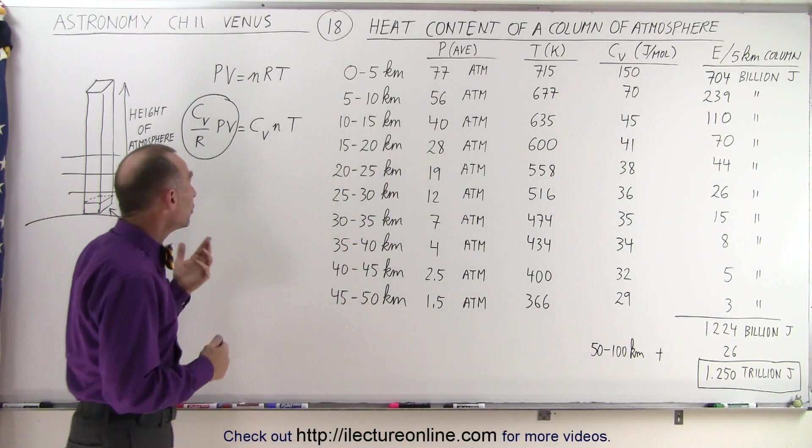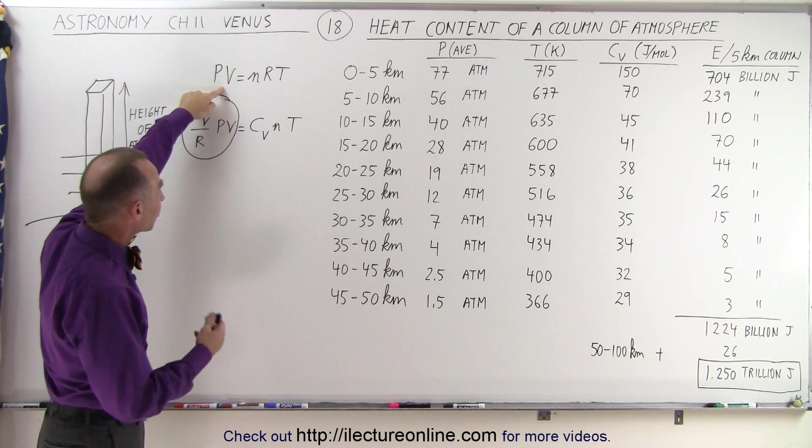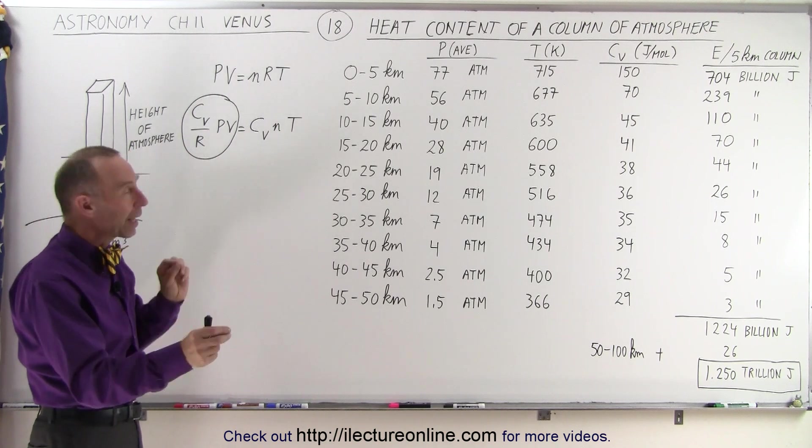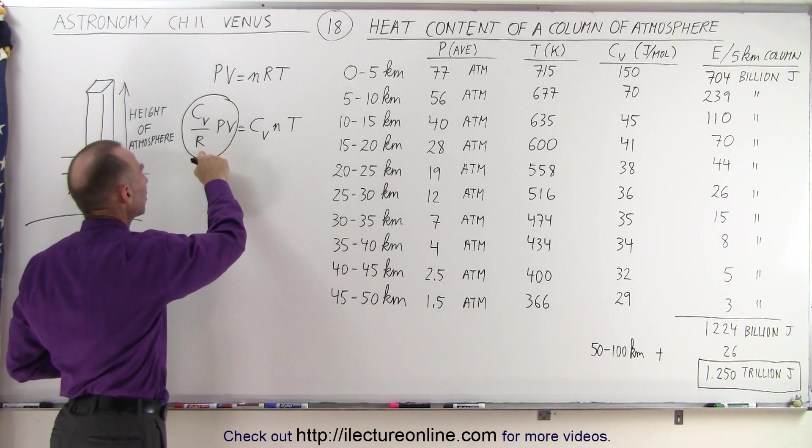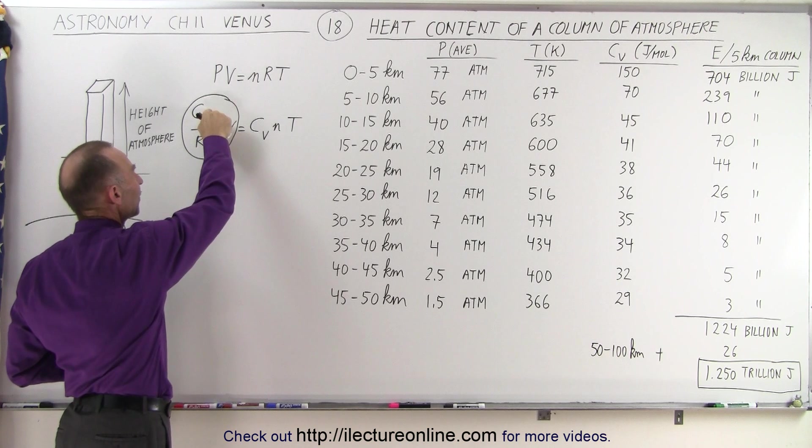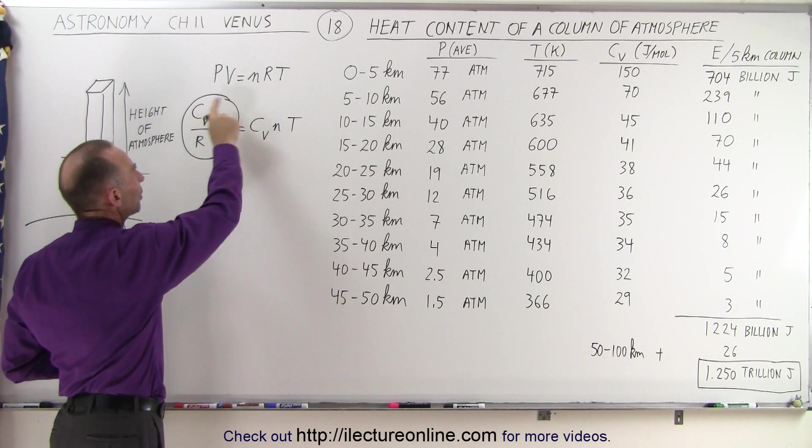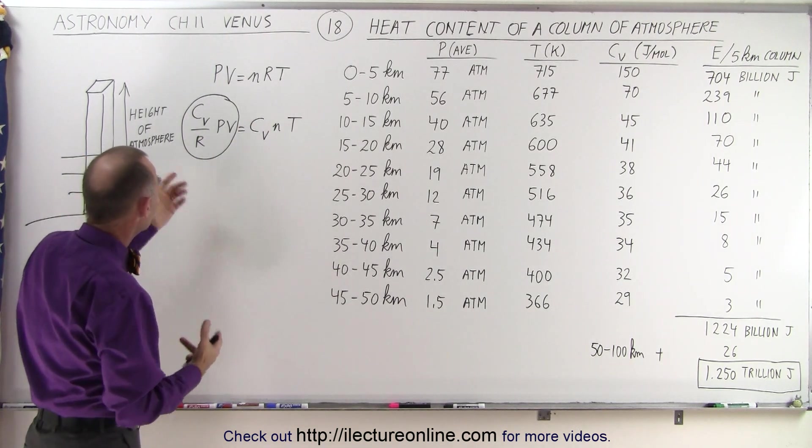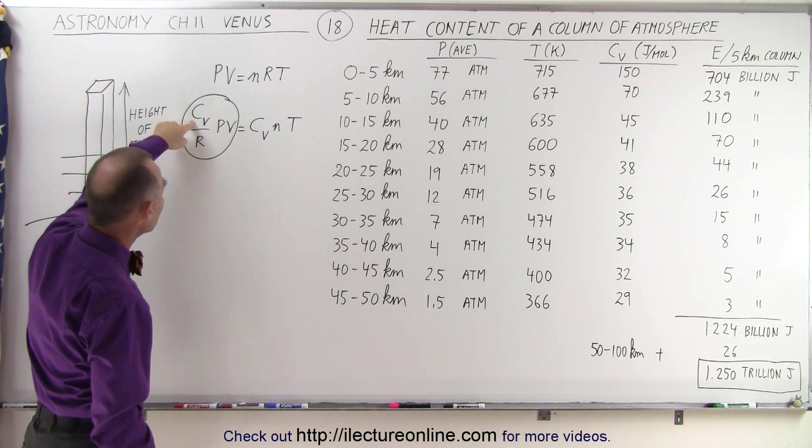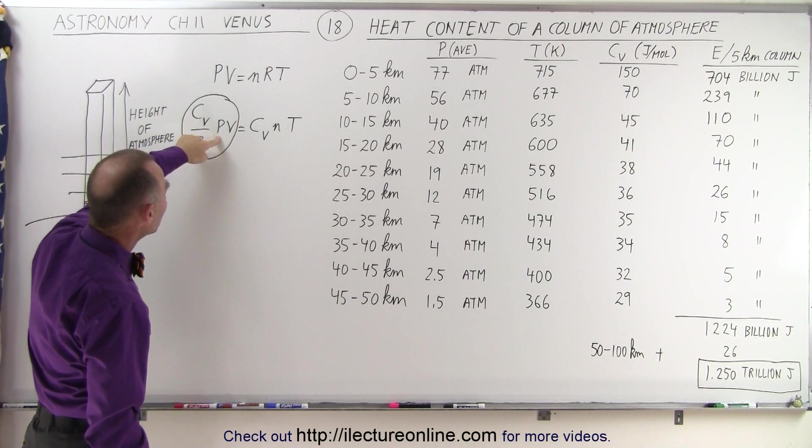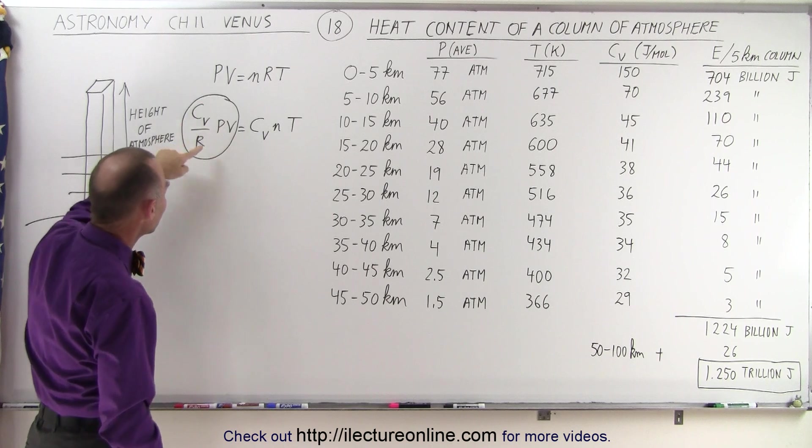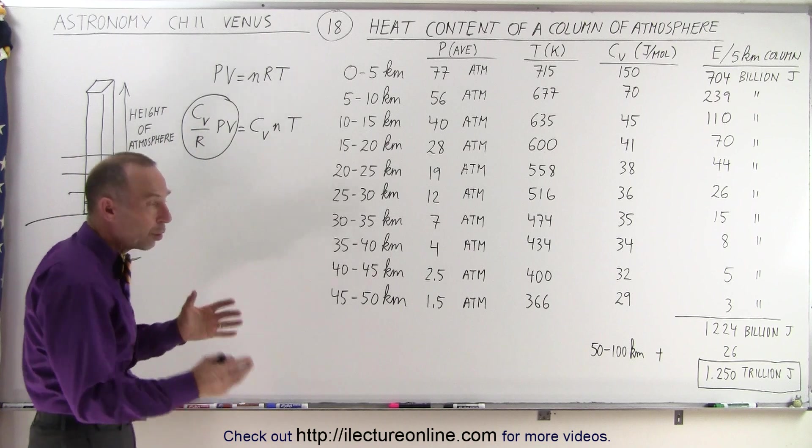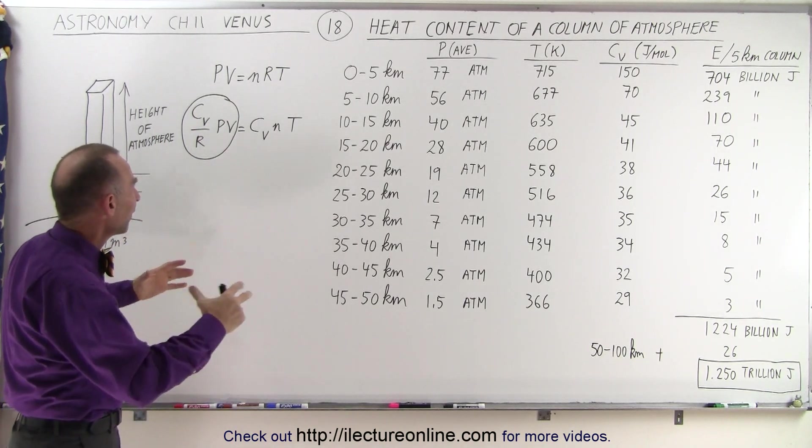Now it turns out that we use the ideal gas equation, PV equals nRT. If we now multiply both sides by C_V divided by R, that's the specific heat of the gas divided by the gas constant, then on the left side, we end up with an expression where we calculate the specific heat, the pressure, and the volume, and divide by the ideal gas constant, and that will equal the energy content within a cubic meter of atmosphere.